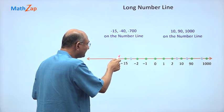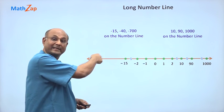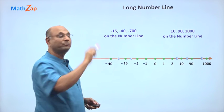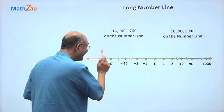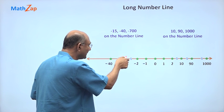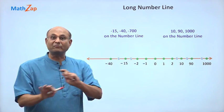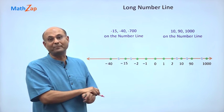Minus 40. Minus 15, minus 16, minus 17, minus 18, minus 40 will come somewhere there. So I will put a break and put minus 40. The break tells you, you don't know the distance between these two points. There are lots of points in between which we have not marked. That's why we have put a break in between.